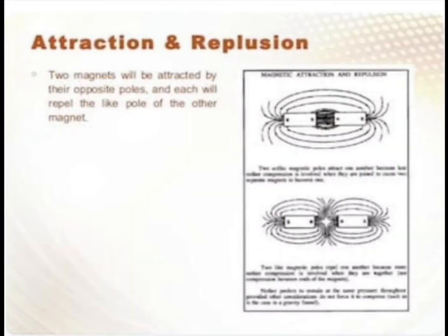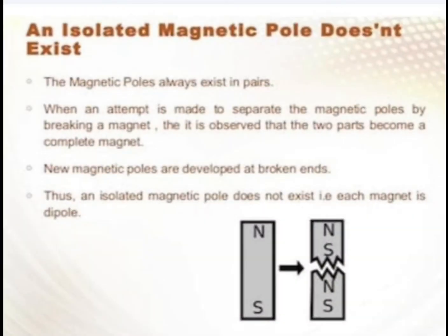Attraction and repulsion — वही: North Pole, North Pole को repel करेगा; South Pole, South Pole को repel करेगा; North Pole, South Pole को attract करेगा। Opposite poles attract and same poles repel। अब अगर एक magnet है और आप उसको center से cut कर दें, तो जहाँ से आप cut करेंगे — जैसे North Pole साइड से cut किया, तो वहाँ पे South Pole create हो जाएगा; और South Pole साइड से cut किया तो वहाँ पे North Pole create हो जाएगा। New magnetic poles are developed at broken ends।